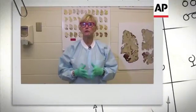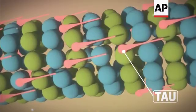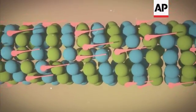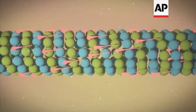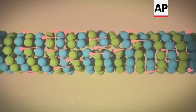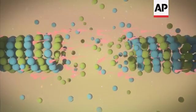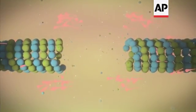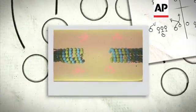Tau is a normal protein in the brain, and normally it's inside the nerve cell, contributing to what we call the cytoskeleton, or the skeleton of the cell. It helps hold up the cell shape. Under abnormal circumstances, like after trauma, when the nerve cells are damaged, the tau actually comes off the skeleton — it comes off the microtubules — and it starts clumping up. Eventually, it'll kill the cell if enough builds up over time.